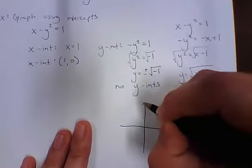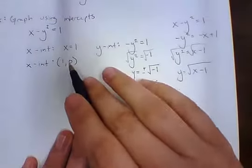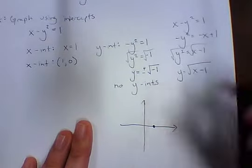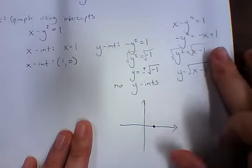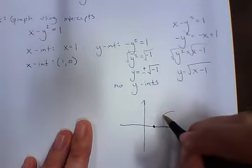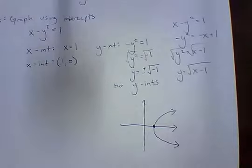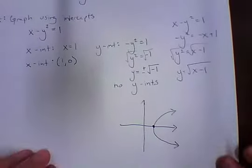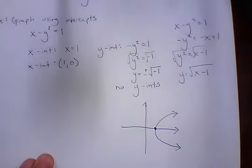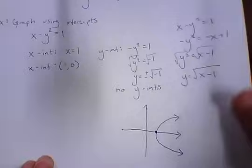With that information, I set up the coordinate plane, plot the point at (1, 0), and sketch that sideways parabola shape — the graph of y equals the square root of (x minus 1). And there we have it: we've graphed using intercepts.